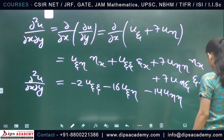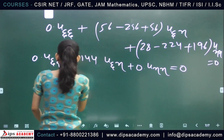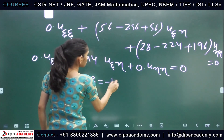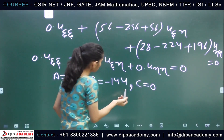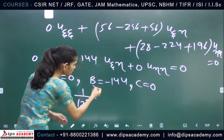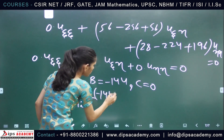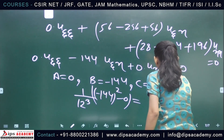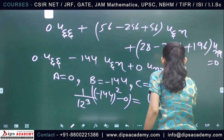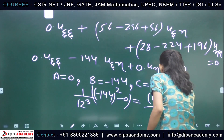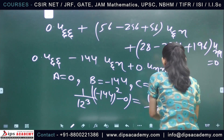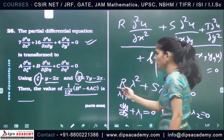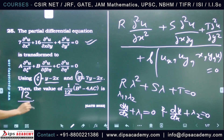With A = 0, B = -144, C = 0, the expression (1/12³)(B² - 4AC) = (1/12³)(144² - 0) = (1/12³)(12²·12²) = 12⁴/12³ = 12. So the answer is 12.